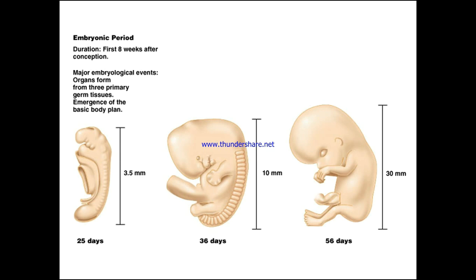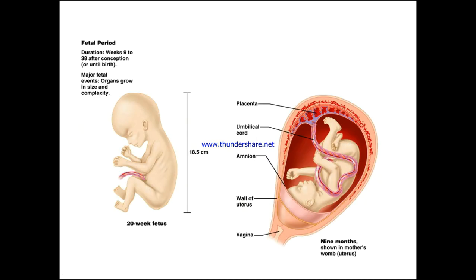During the embryonic period, the first eight weeks after conception, we have the major embryological events — the organs forming from three primary germ tissues and the emergence of the basic body plan. We can see from 25 days at 3.5 millimetres, up to 36 days at around 10 millimetres, up to 56 days at 30 millimetres, where we can really start to see the formation of the human form in more detail.